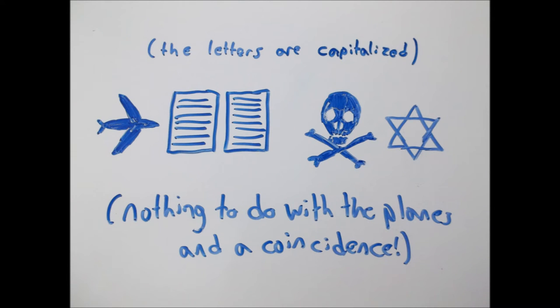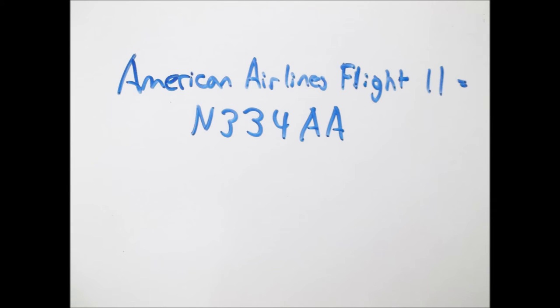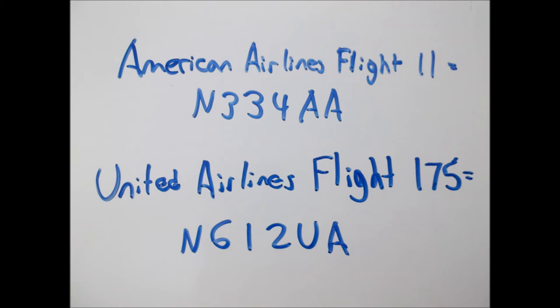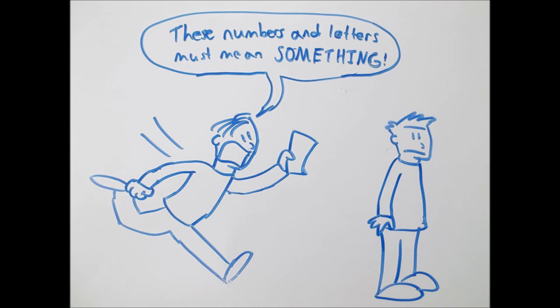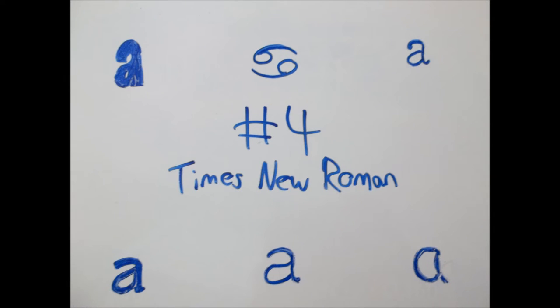Because the numbers on the respective planes that crashed were N334AA and N612UA, and Q33 was probably spread as the number because of the image it brought. Number 4, Times New Roman.